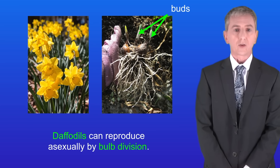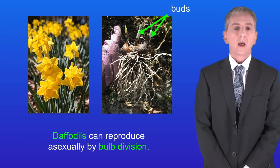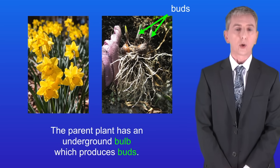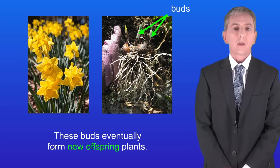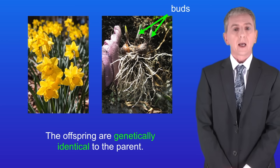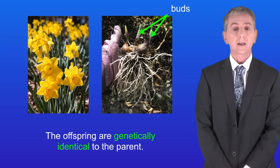Daffodils can reproduce asexually by bulb division. The parent plant has an underground bulb which produces buds. These buds eventually form new offspring plants, and again the offspring are genetically identical to the parent.